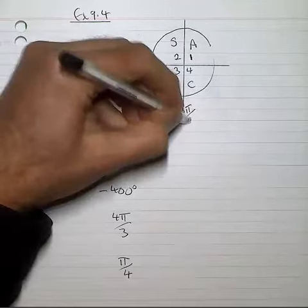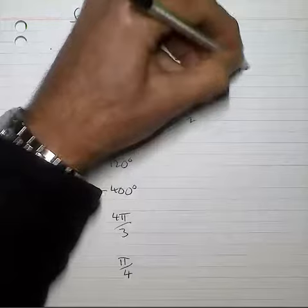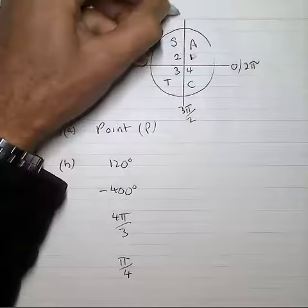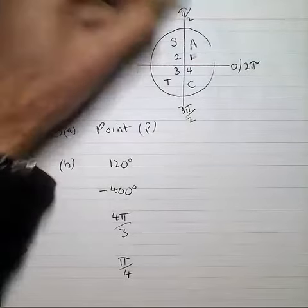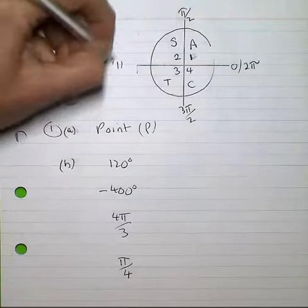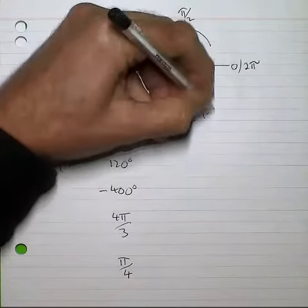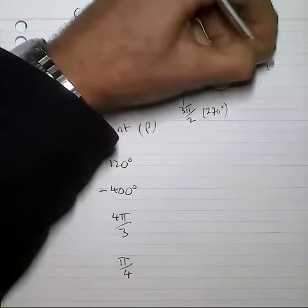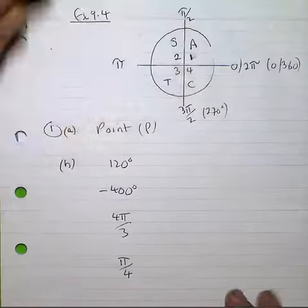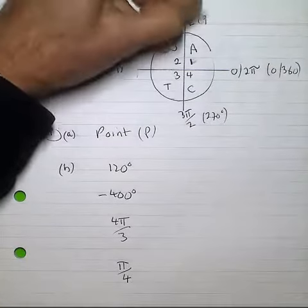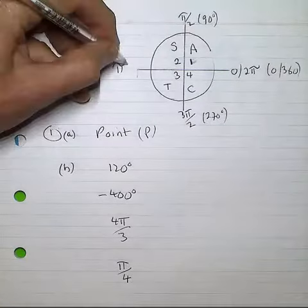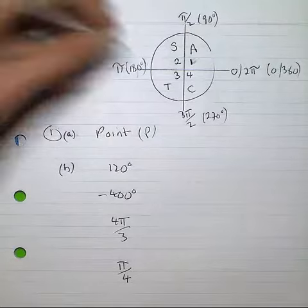I'll put in the radian measures there. That could also be 2π. We've got π over 2, and we've also got π. If we wanted the angles, 270, 0 and 360, 90 degrees at 12 o'clock, 180 degrees to the left.